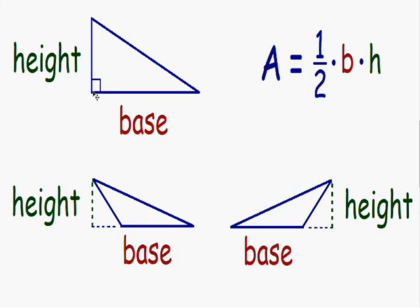Let's take a look at an example where it's not so obvious. Looking at this bottom left example, notice how I pick the bottom side of the triangle to be my base. Then to find the height, we have to go to the top of the triangle and draw a line that goes straight up and down right to the base. That distance straight down from the top of the triangle to the base is going to be your height.